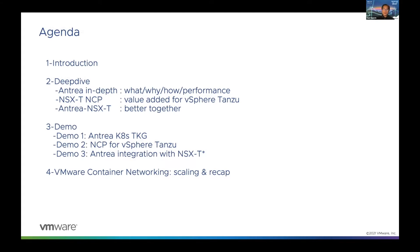Let's go with the three different topics. First, we're going to talk about Antria in depth — what, why, how — what are the performance numbers, what are the features, what are the solutions we have, why we do that, and what can you take away. Second, we're going to talk about NSX NCP — you already know it's network containers, that's how we added value for vSphere Tanzu. And third, it's a new announcement: VMware's Antria and NSX integration together, a tech preview. Every topic includes a demo. At the end I'll go with scaling, how we put things in production, and a full recap.